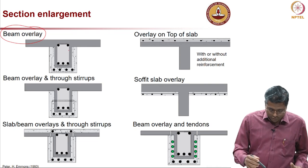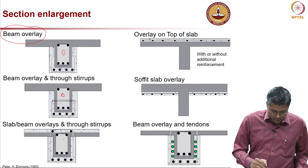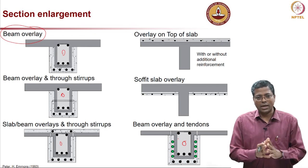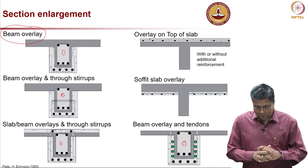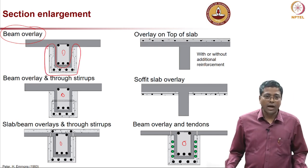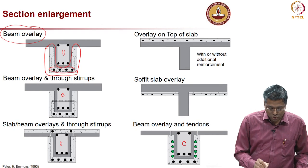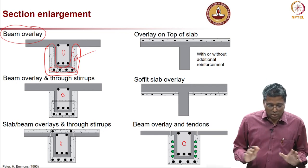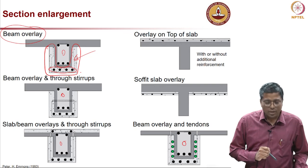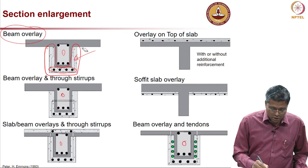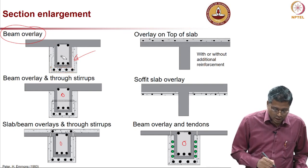The area inside on the left is just to show that is the area inside the stirrup; there is no other significance. When you talk about beam overlay, this is the new concrete which is added, and you can also see new primary reinforcement and new shear reinforcement. In the first case the shear reinforcement is not drilled into the existing concrete.